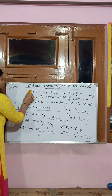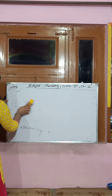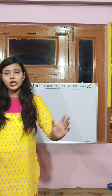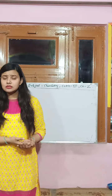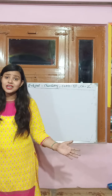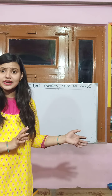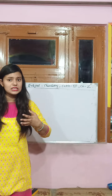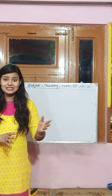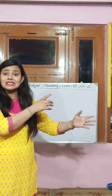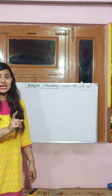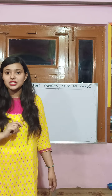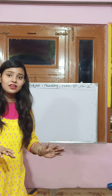I hope everything related to today's topics is clear. We discussed ideal and non-ideal solutions — ideal solutions follow Raoult's Law, non-ideal solutions do not. Non-ideal solutions show either positive or negative deviation. We also discussed azeotropes: minimum boiling azeotropes correspond to positive deviation, and maximum boiling azeotropes correspond to negative deviation. Remember the examples from NCERT.